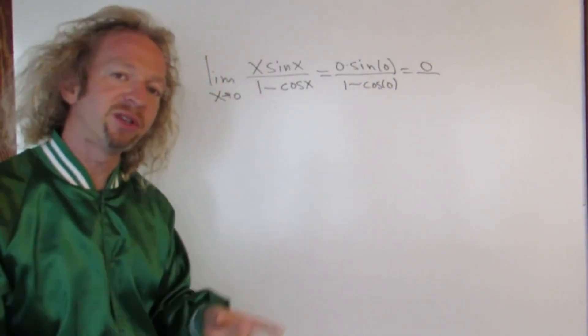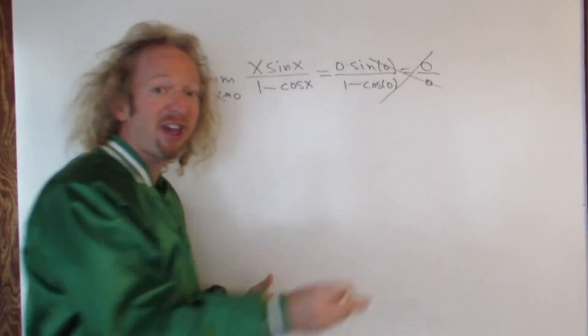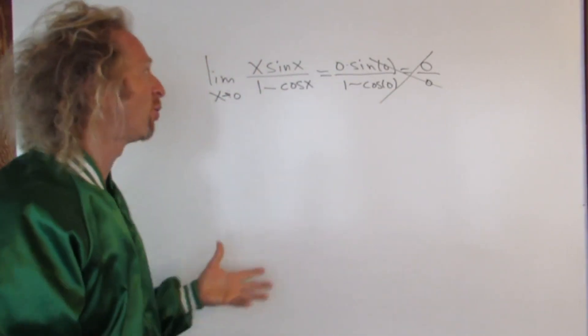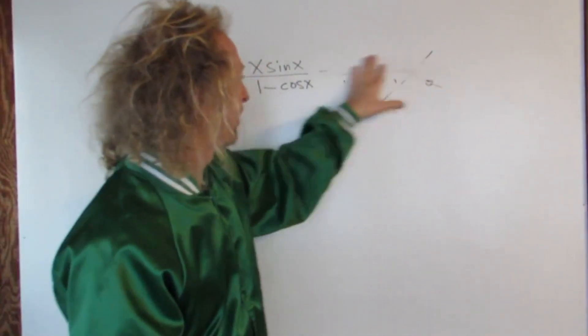Cosine zero is 1, so you get 1 minus 1, so you get zero. So this is a super fail. This does not work. So what do you do? You do something else. Let's try to figure it out.